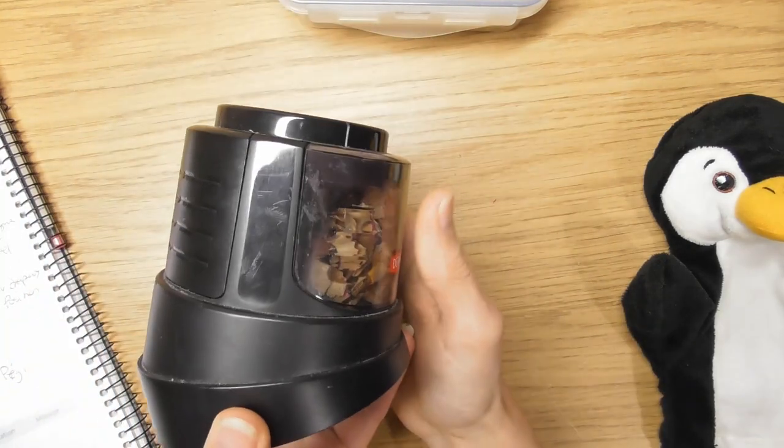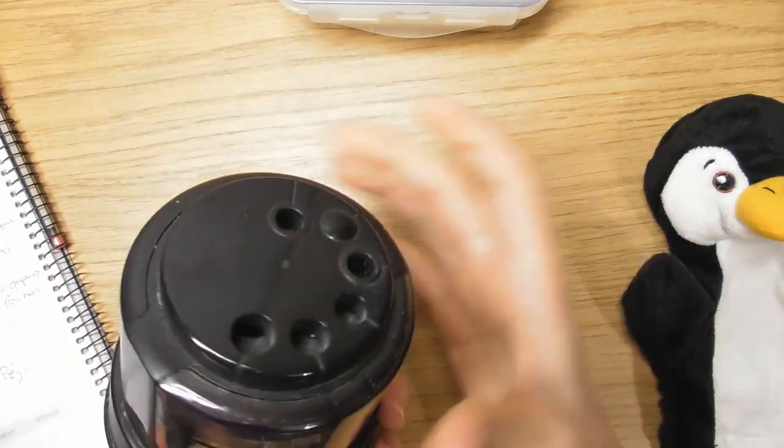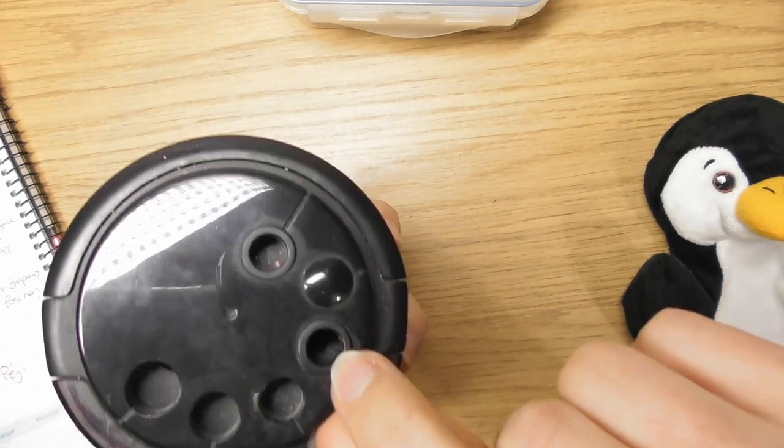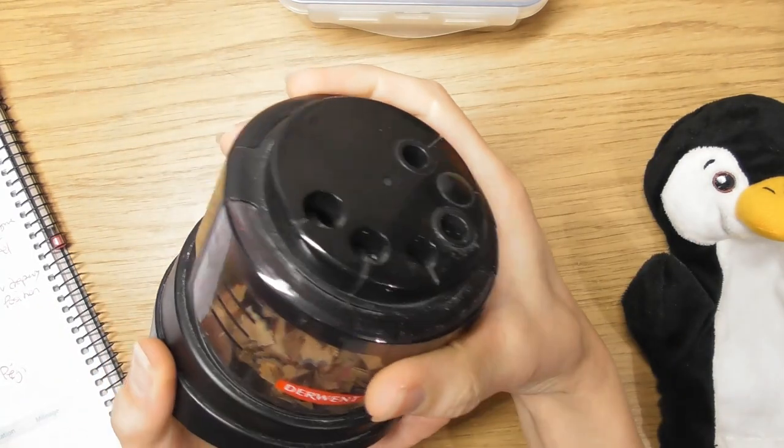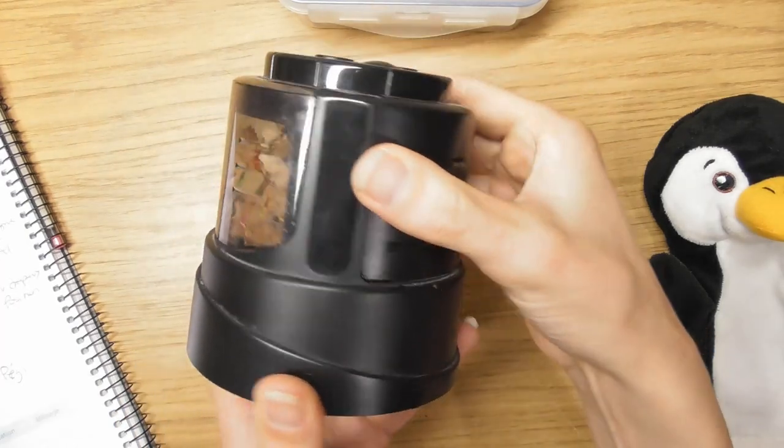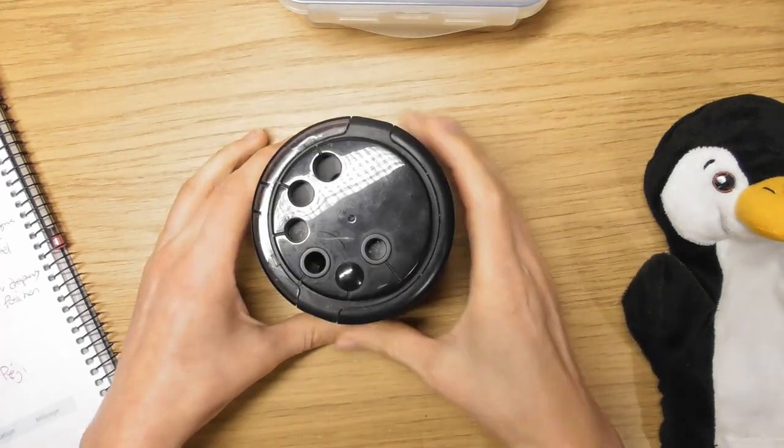Well what it is, it's a pencil sharpener but you don't have to do anything. You just put your pencil in there in one of these holes and it will sharpen it lovely. But it twists like this so you can put it on your desk like that.